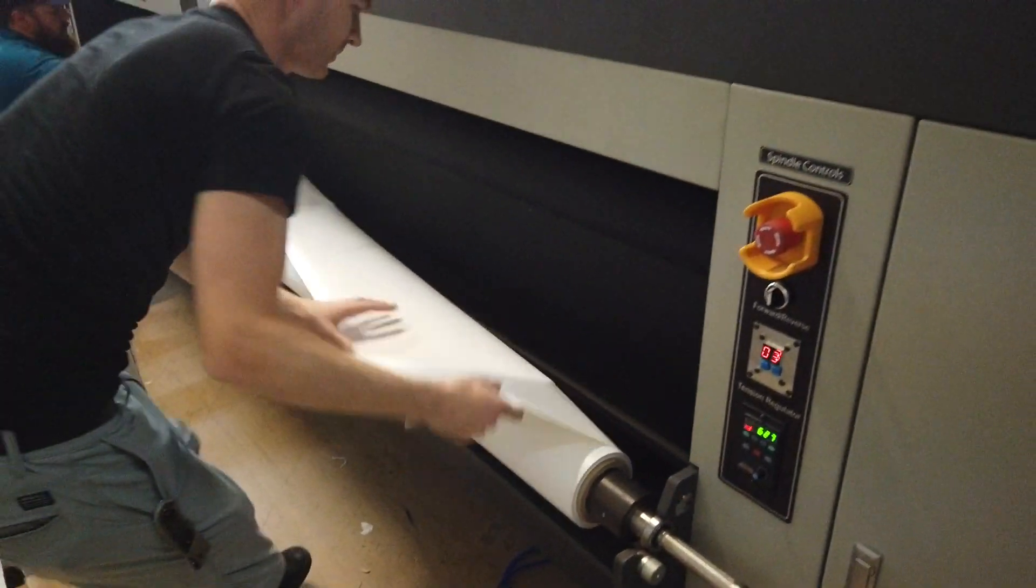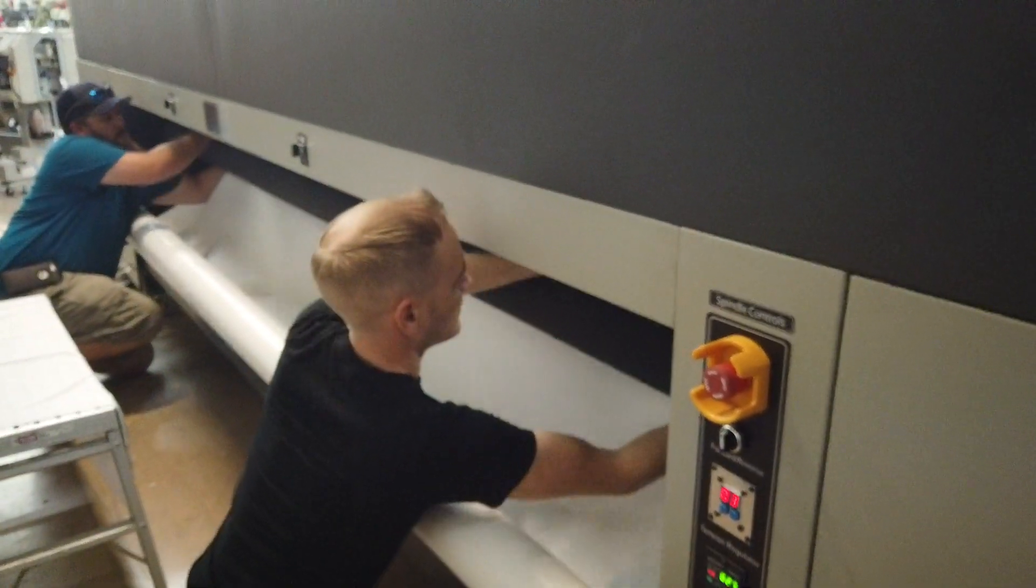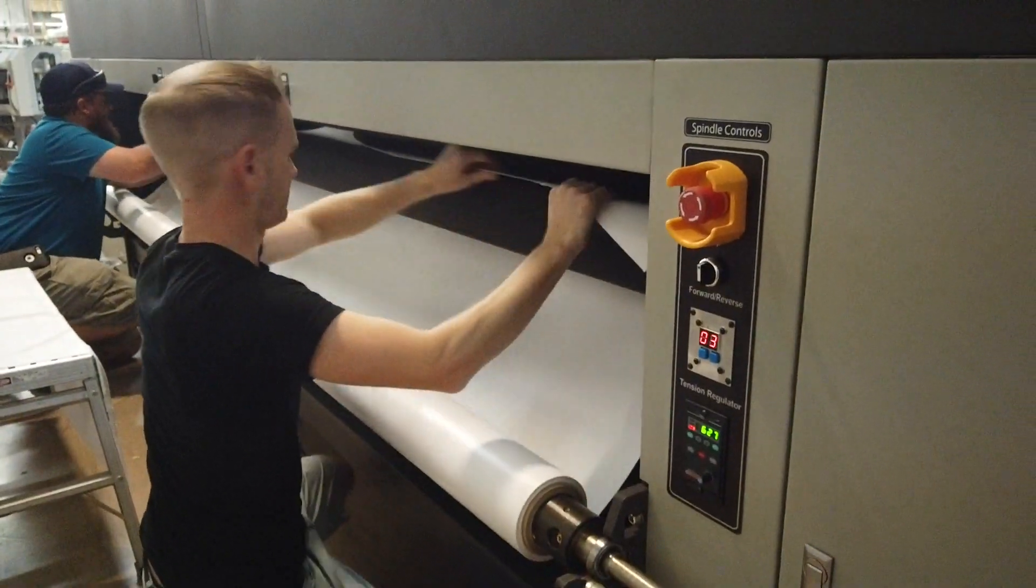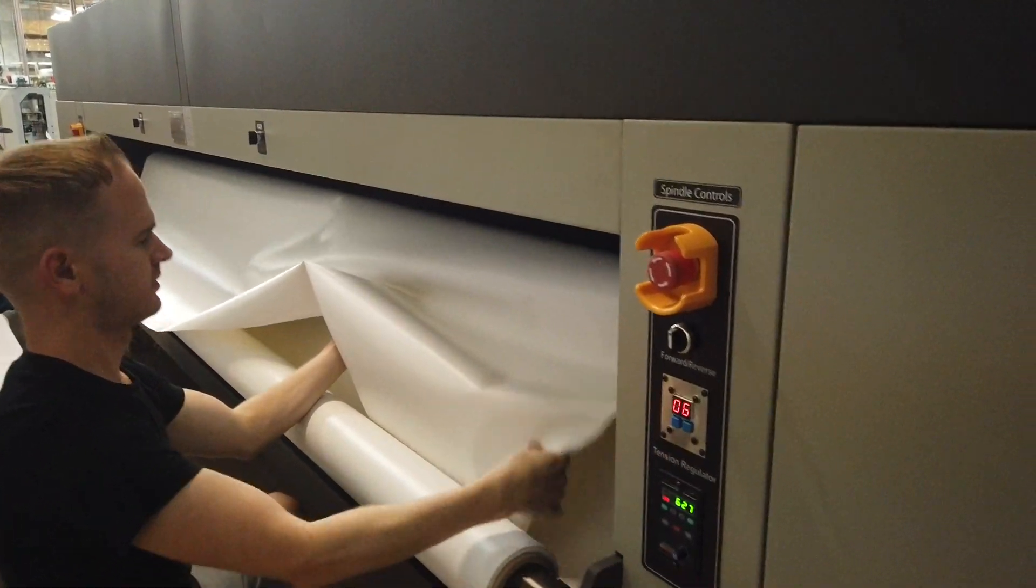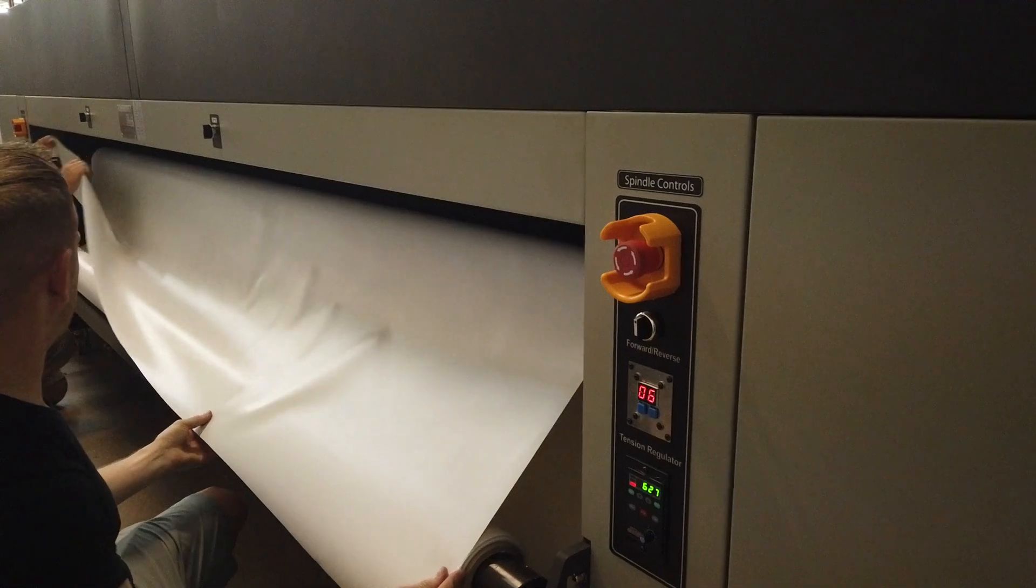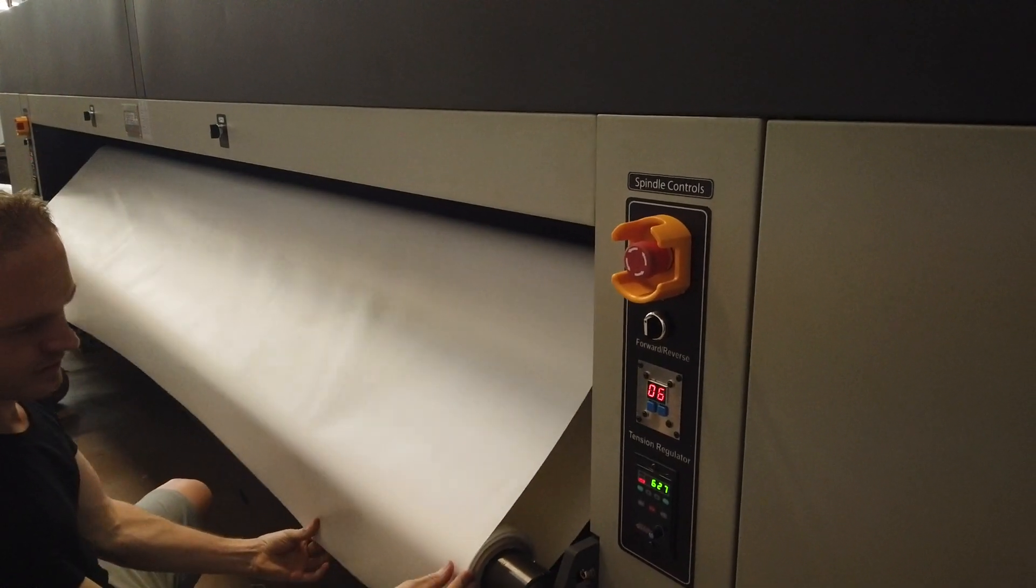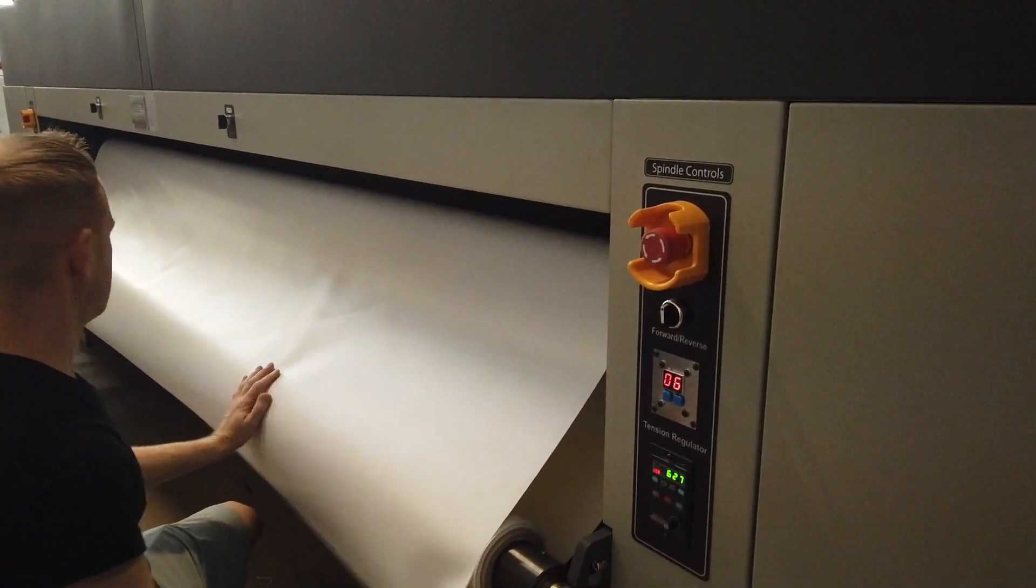And now the two of them will go under the first black roller and then over the second. You don't care about that yet.